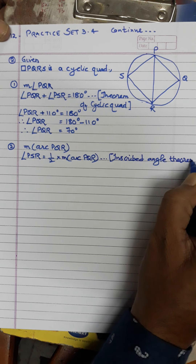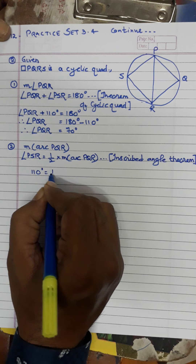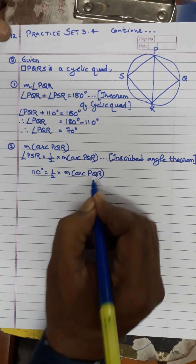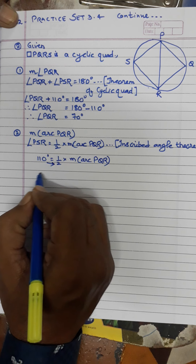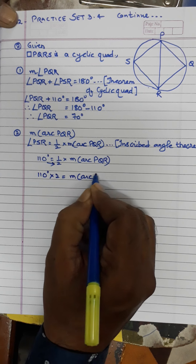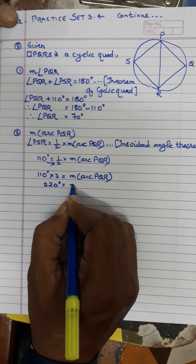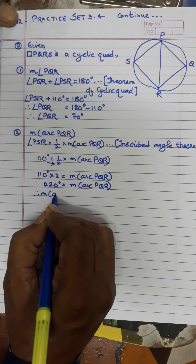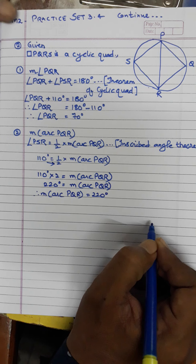Cross multiplying: 110 times 2 equals measure of arc PQR. So 110 into 2 is 220. Therefore measure of arc PQR is equal to 220 degrees. That's the second bit.